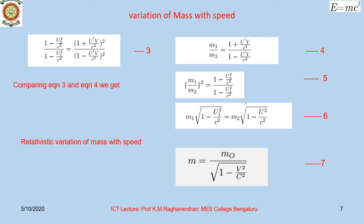Thus, in general, if m denotes the mass of a body moving with speed v with respect to an observer, and m0 is its rest mass — that is, the mass when it is at rest with respect to the same observer — then we may write Equation 7: m = m0 / √(1 − v²/c²). This equation tells us how the mass of a body depends on the speed of its motion.